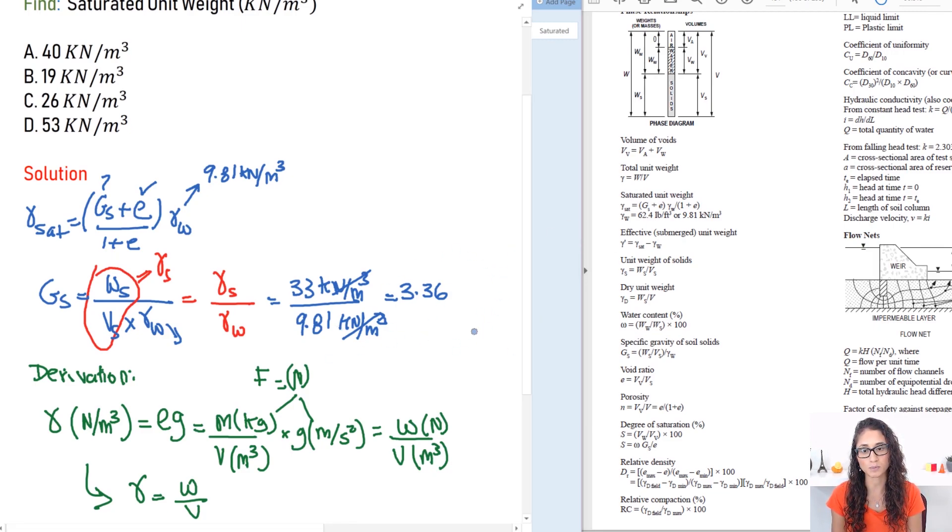Okay, so once we figured out our specific gravity, now we can just go back here and calculate our saturated unit weight. So I have GS which is 3.36 plus the void ratio is 0.41 divided by 1 plus 0.41, and this term is multiplied by 9.81 kilonewtons per cubic meter. So this should give you an answer of 26.2 kilonewtons per cubic meter. So that is your answer and that's answer C.